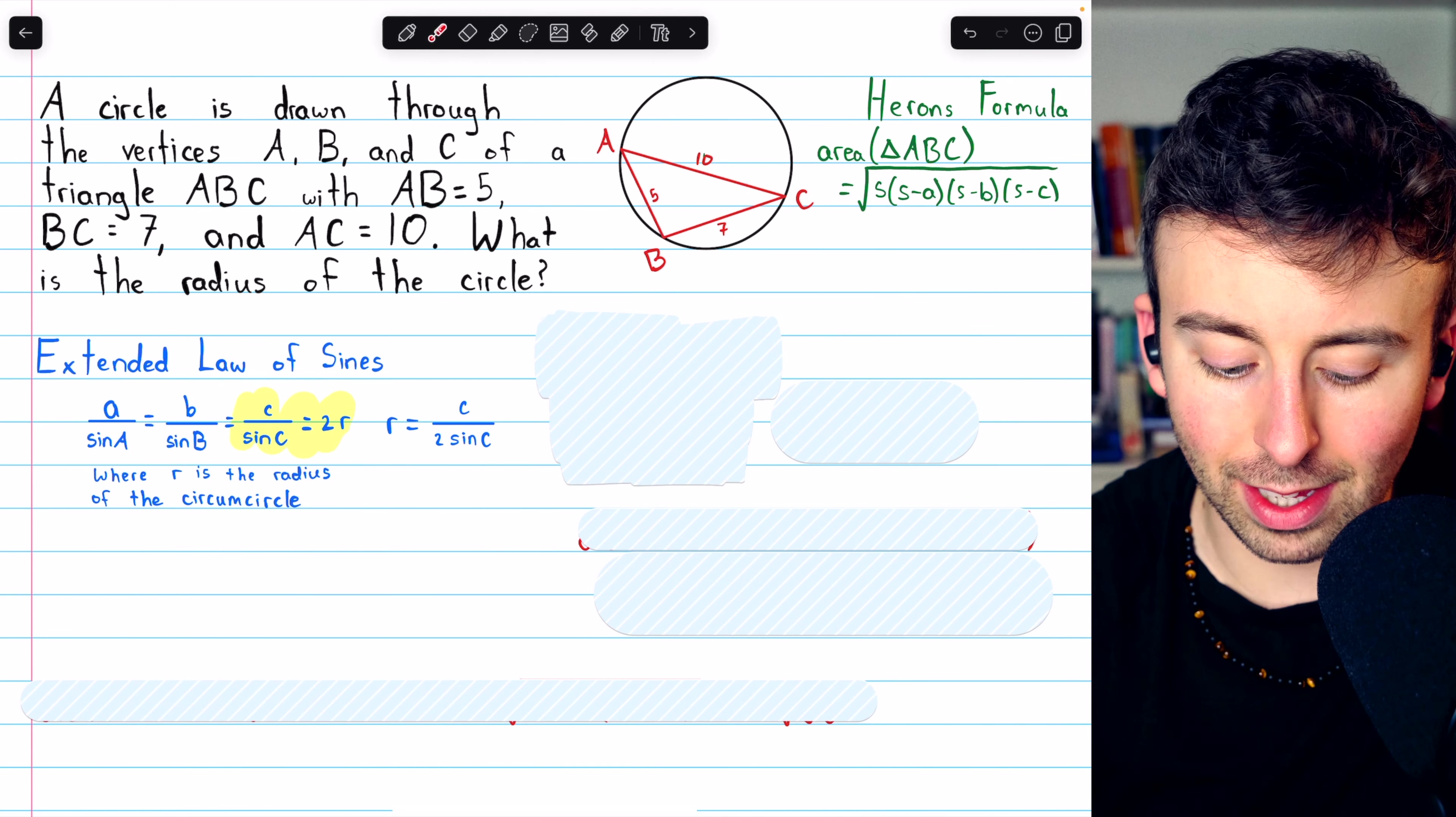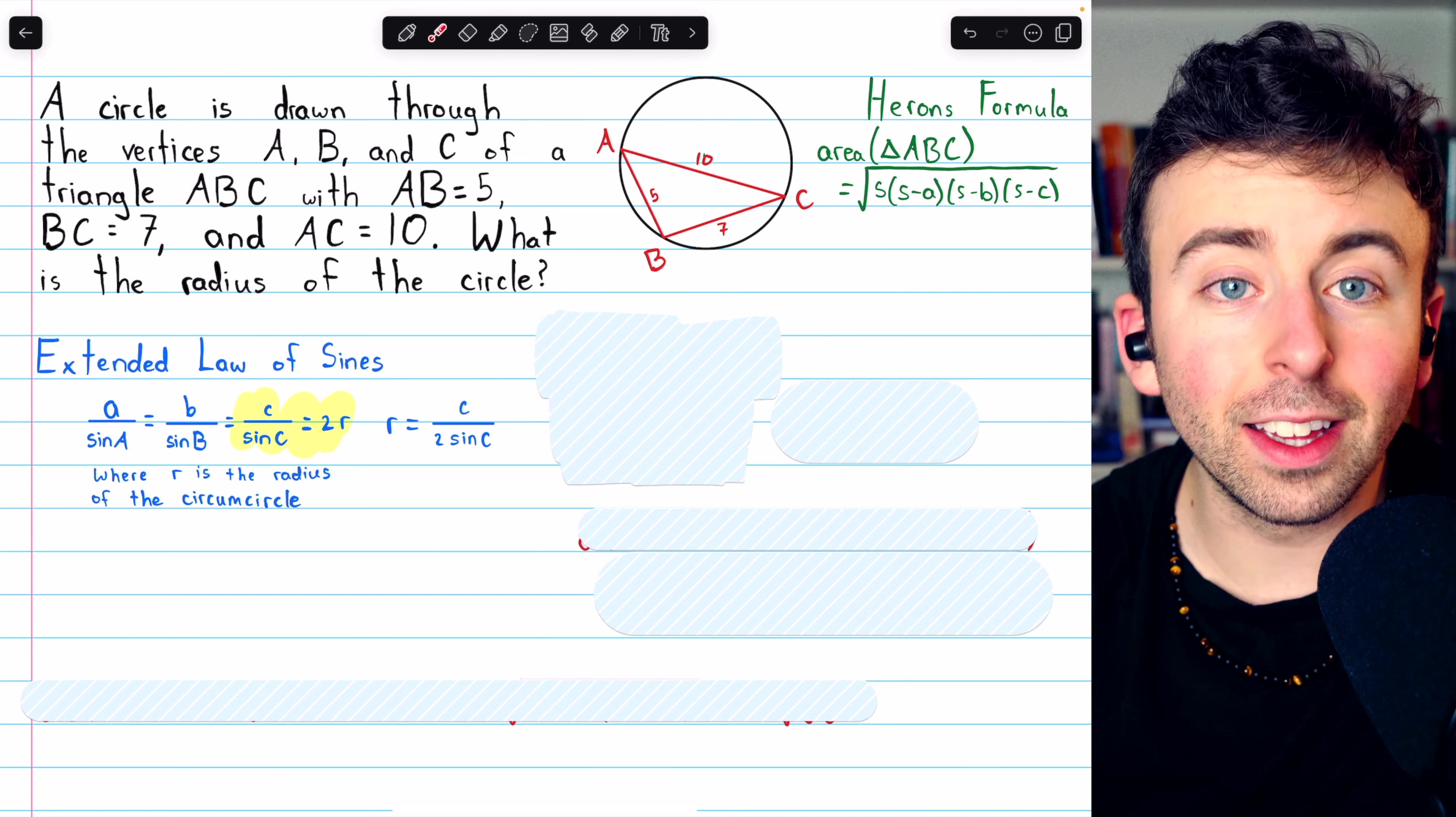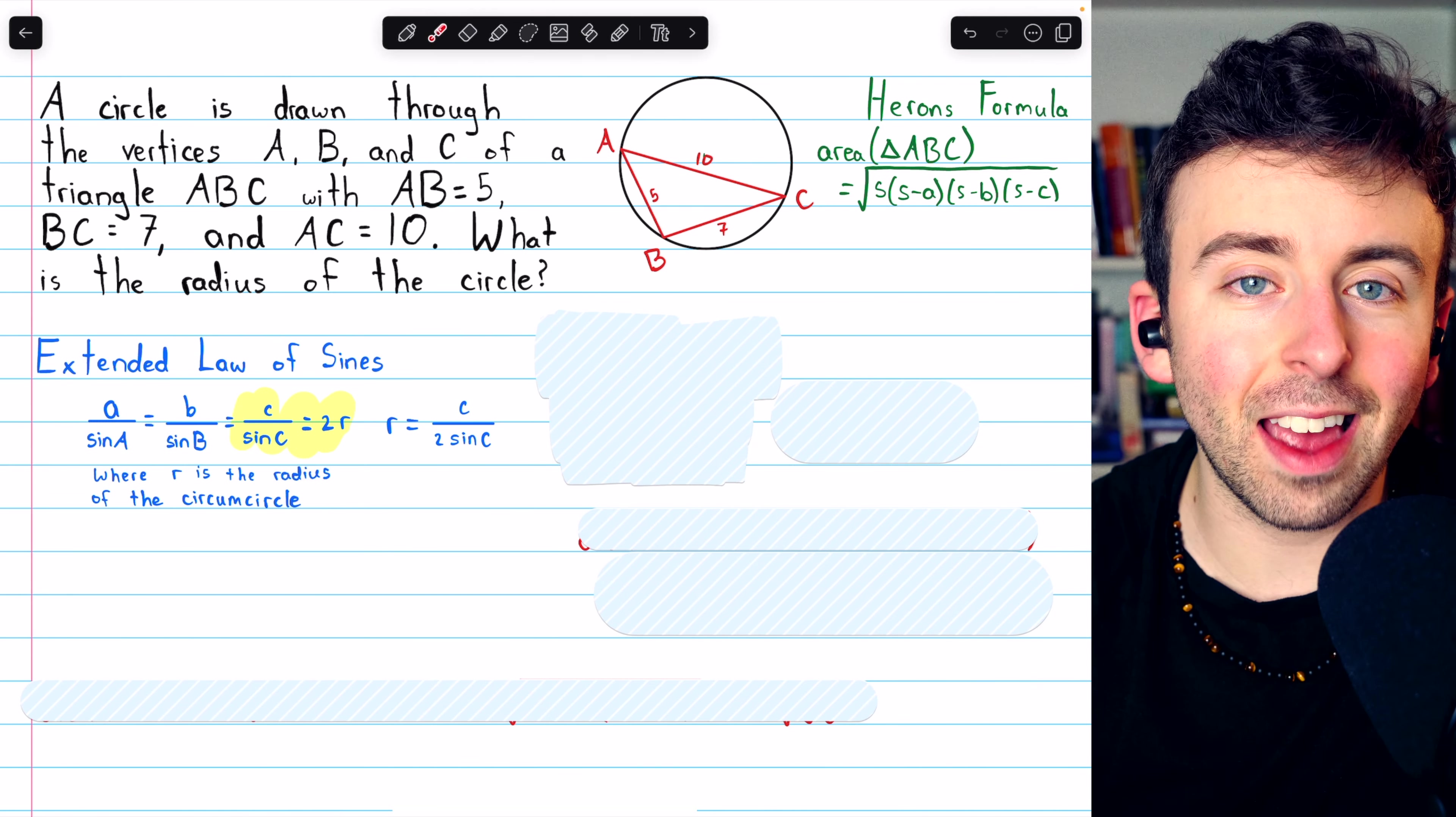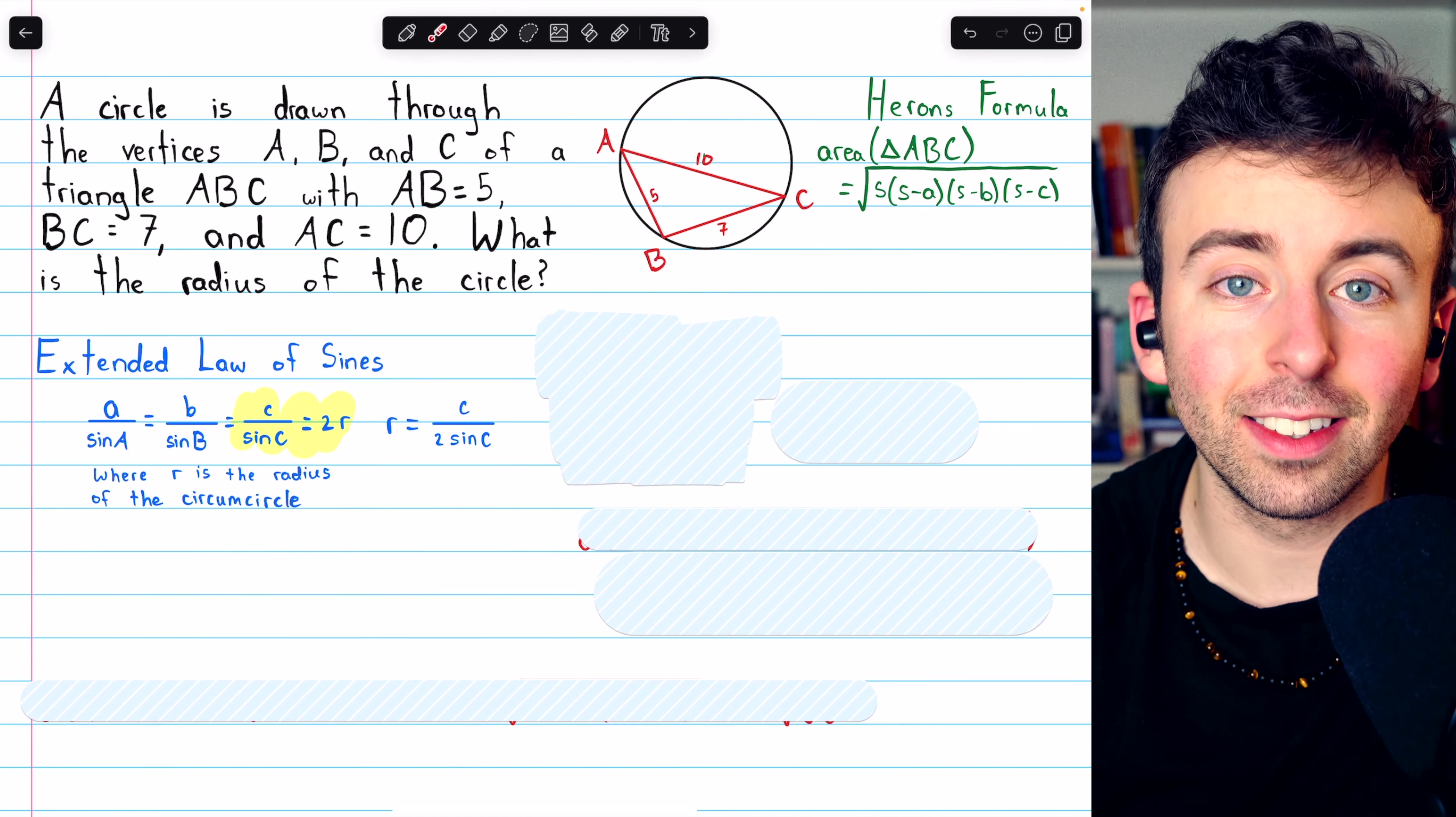I should mention, we're using the letters here in the conventional way. Uppercase letters refer to the angle of the triangle, and the lowercase letters, like lowercase c here, refer to the side opposite the respective angle.